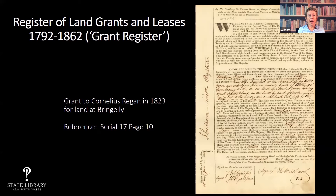This example is for land granted to an emancipated convict called Cornelius Regan in 1823, for land at Bringelli, which is toward the west of Sydney — now part of Sydney but at that time rural land. Its reference number is Serial 17, page 10, meaning volume 17, page 10. In the parlance of the HLRV, that is its attribute, which will become more significant later on.